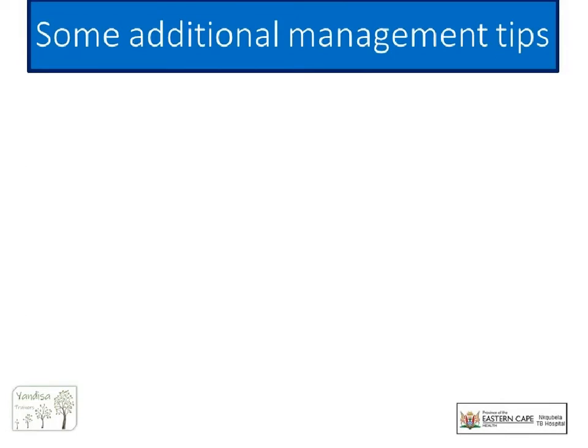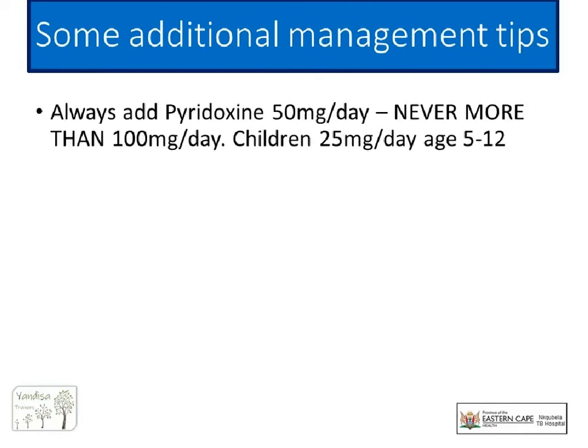A couple of final recommendations for both MDR-TB regimens: always remember to add pyridoxine, but the new guidelines are very clear that only 50 to 100 mg may be given, as higher dosages are also associated with peripheral neuropathy. It is also interesting to note that pyridoxine is useful for terizidone- and INH-induced peripheral neuropathy, but not for linezolid-induced neuropathy.